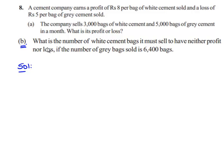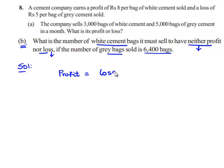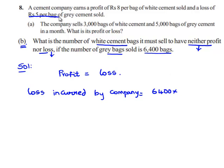We will see the second problem. The question is: what is the number of white cement bags the company must sell to have neither profit nor loss, if the number of grey bags sold is 6,400? Neither profit nor loss implies the profit of the company must be equal to the loss of the company. If the number of grey bags sold is 6,400, the loss incurred is Rs.5 per bag. Therefore, 6,400 multiplied by Rs.5 gives the total loss, which is equal to Rs.32,000.